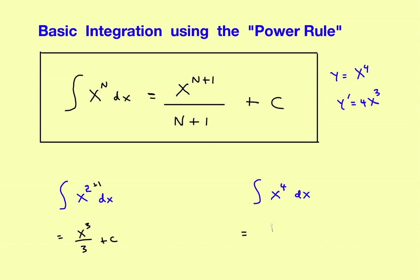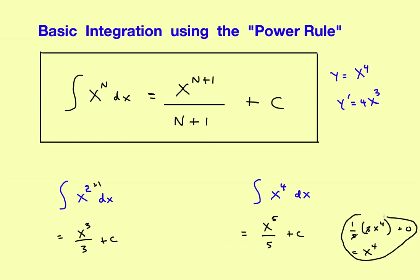Let's apply the same thing here. The rule is increase the power by 1 and divide by the new exponent. So for x to the 4th, I'll make it x to the 5th divided by 5, plus C. You can always check this by taking the derivative: you'd have one-fifth times the derivative of x to the 5th, which is 5x to the 4th. The 5's cancel out and leave x to the 4th — back to where you started.